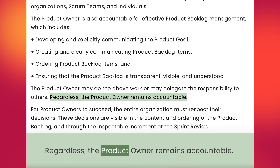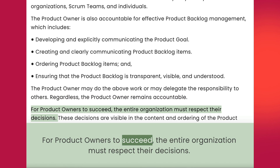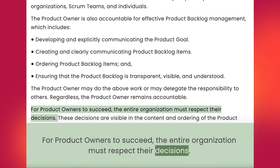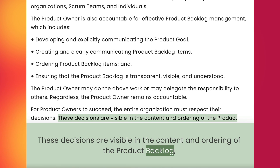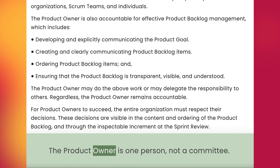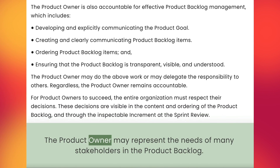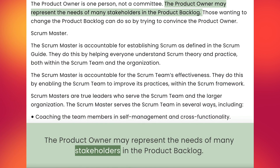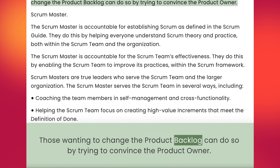Regardless, the product owner remains accountable. For product owners to succeed, the entire organization must respect their decisions. These decisions are visible in the content and ordering of the product backlog and through the inspectable increment at the sprint review. The product owner is one person, not a committee. The product owner may represent the needs of many stakeholders in the product backlog. Those wanting to change the product backlog can do so by trying to convince the product owner.